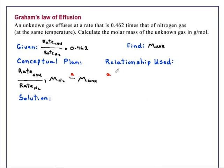That relationship is Graham's law. Graham's law says that the rate of any gas A over the rate of any gas B is equal to the square root of the molar mass of B over the molar mass of A.